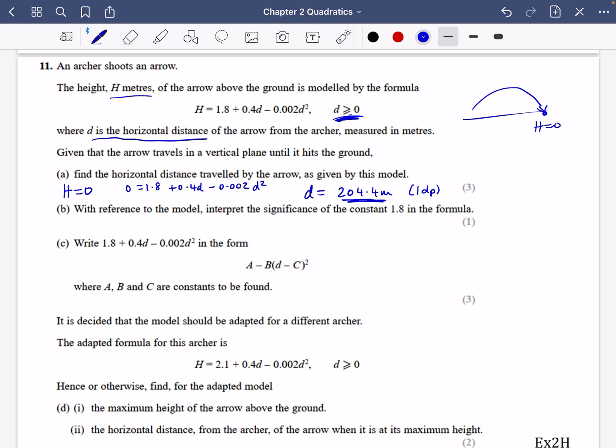It then says with reference to the model, interpret the significance of the constant 1.8 in the formula. Well, that's because we're talking about the horizontal distance. So when it is actually fired at the start, it's the horizontal distance from the archer. We can say that 1.8 meters is the vertical height of the arrow when it is fired. In other words, this distance here is 1.8 when it initially gets fired. It kind of makes sense - 1.8 seems like the right kind of height for a person as well.